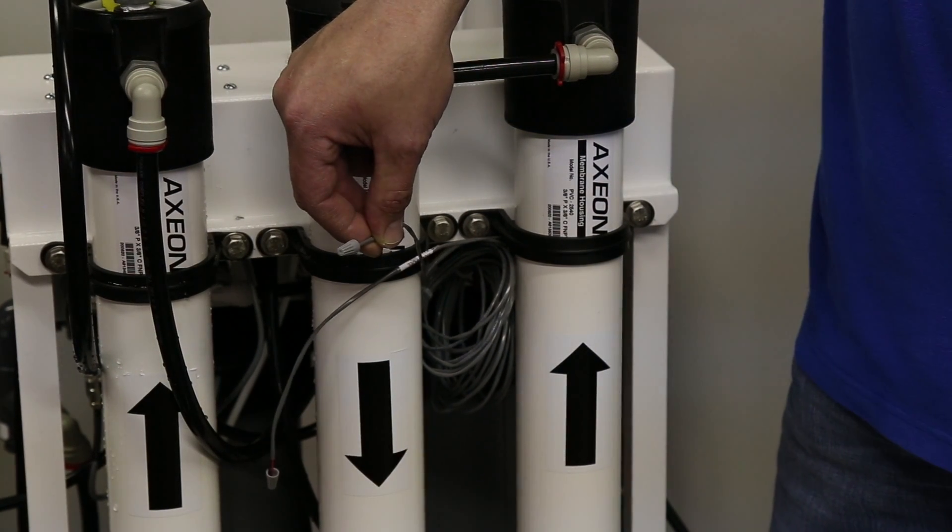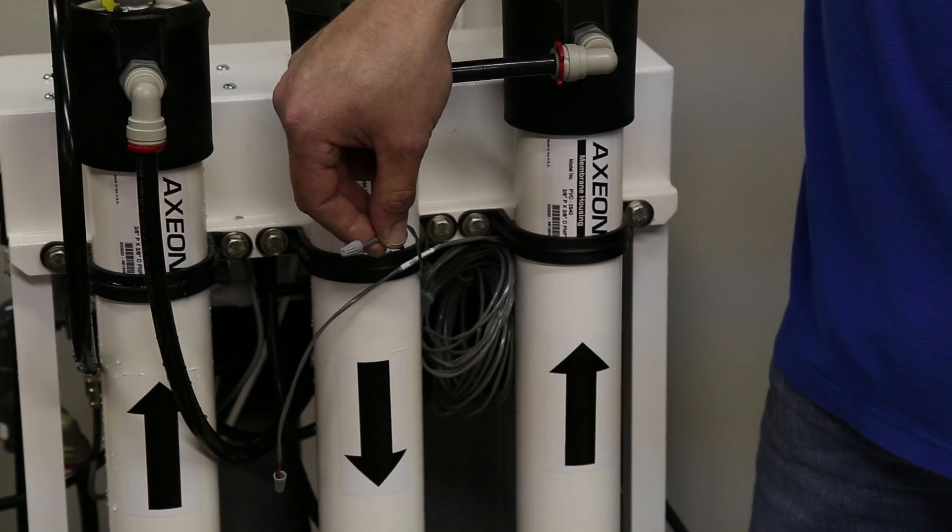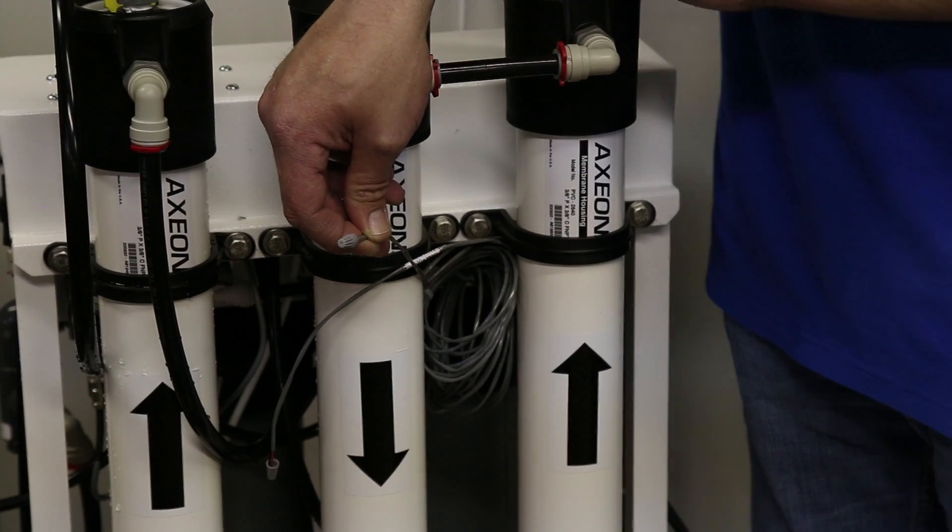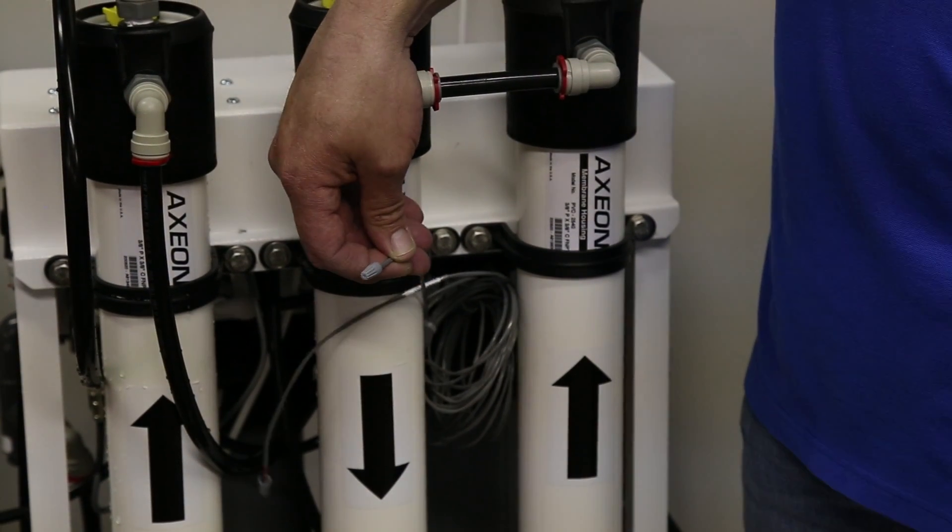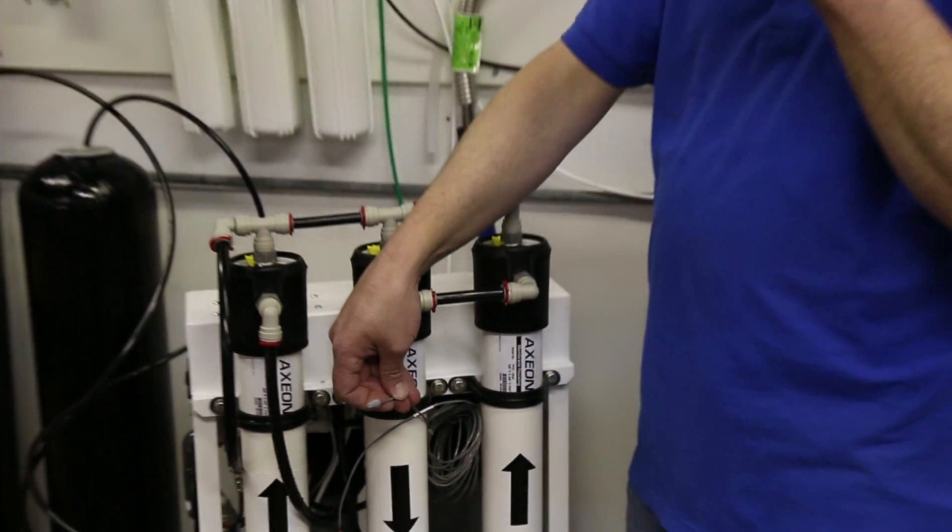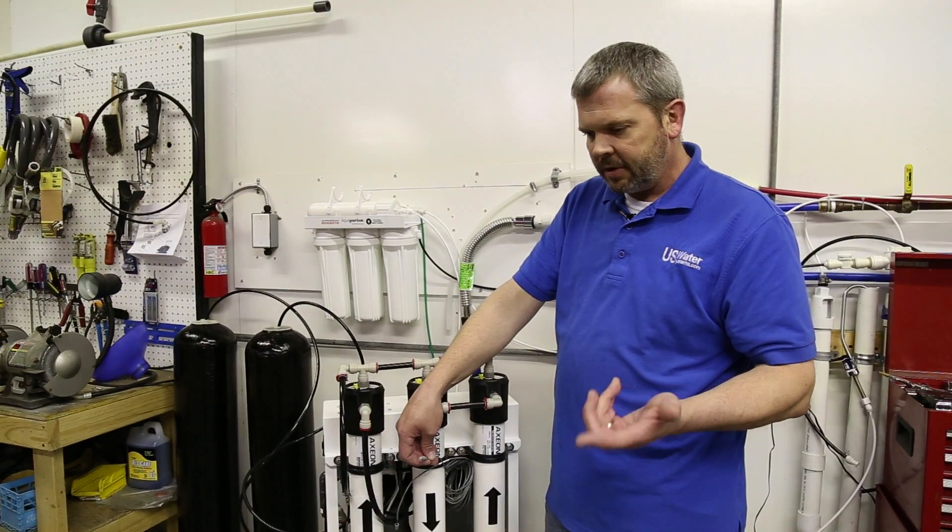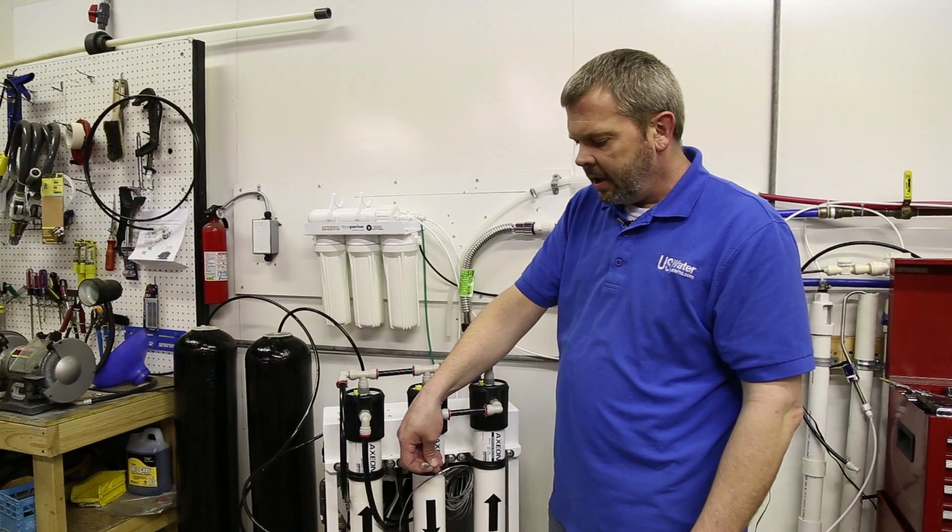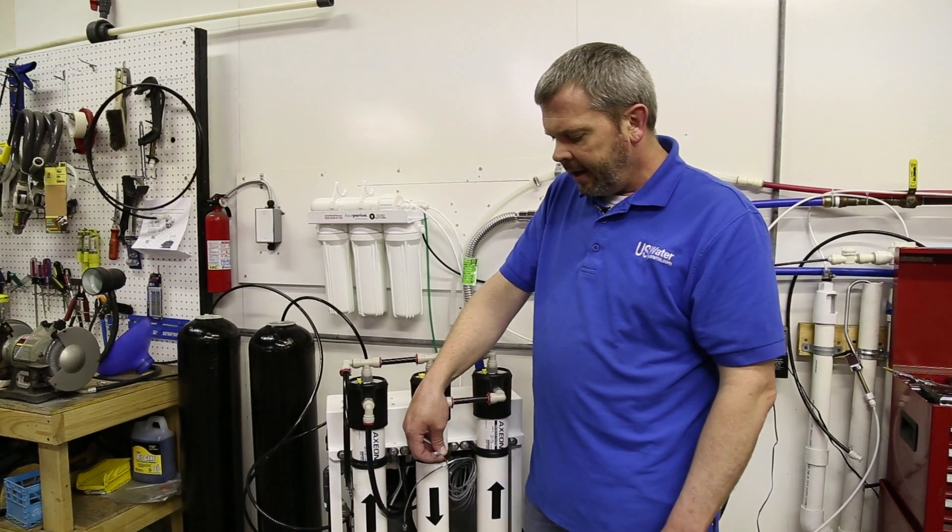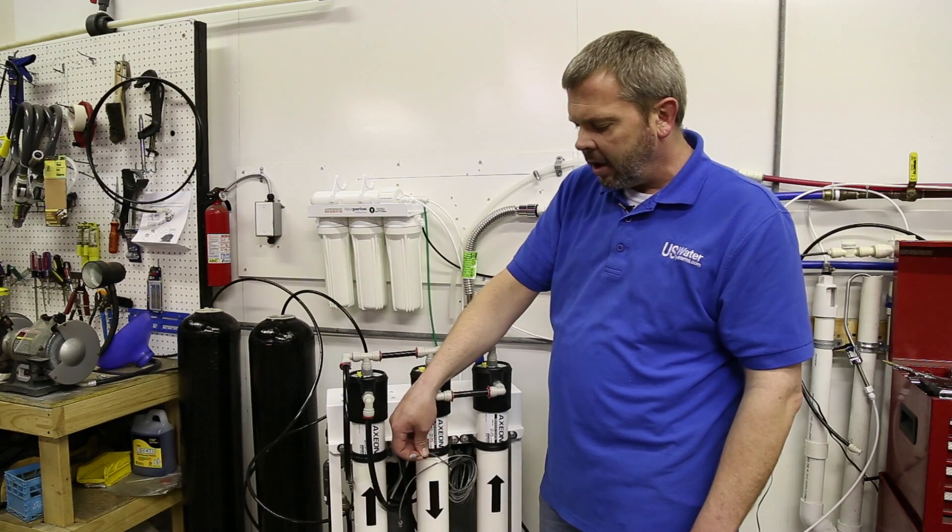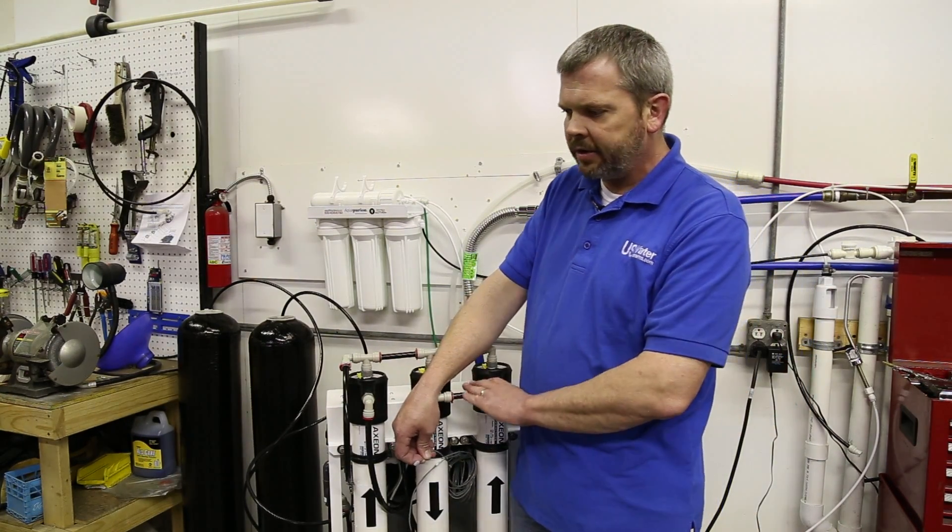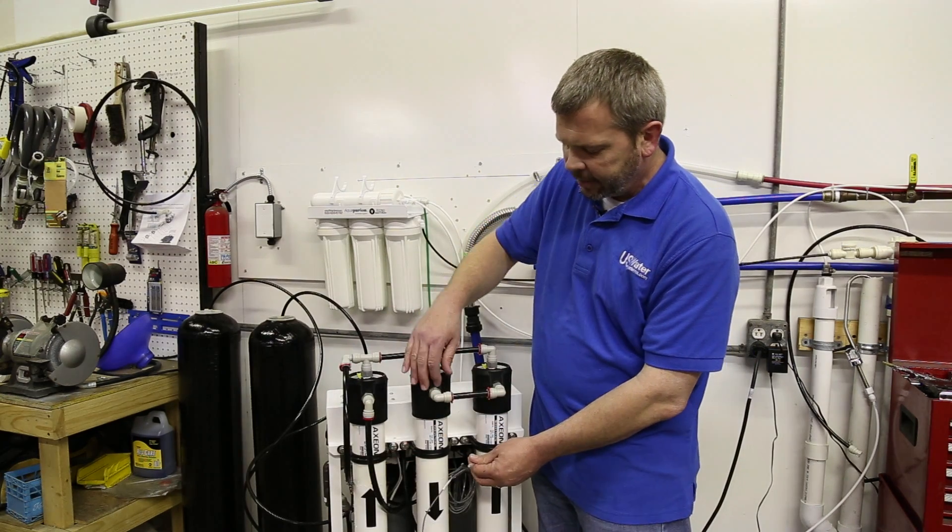That way if your pre-treatment is in backwash or in regeneration, it'll open this circuit and not allow the RO to run while those are actually regenerating or backwashing. Most regenerations or backwashes of filters or softeners are going to allow hard water bypass, so basically untreated water to come by. That's why we want to lock out the RO whenever those are backwashing to ensure we're getting only treated water to the RO system. That's what helps protect the membranes.